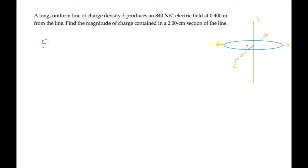We know from Gauss's law that the electric field at a distance r from a uniform line of charge is 1 over 2π epsilon naught lambda over r.